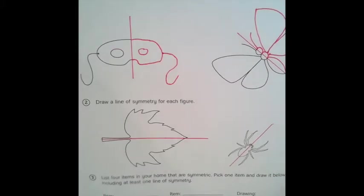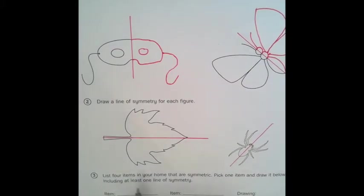Question three is asking you to list four items in your home that are symmetrical. Pick one and draw it below. There's no right answer to that. Well, there is. You want to try to find something that's symmetrical, but the answer is going to vary. So I'm anxious to see what you guys come up with at school.